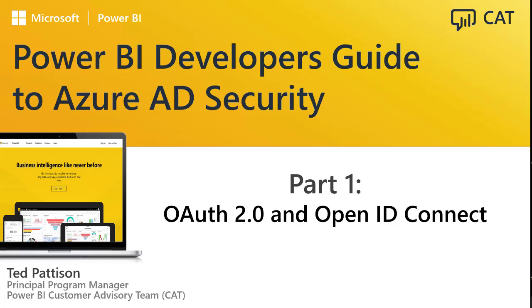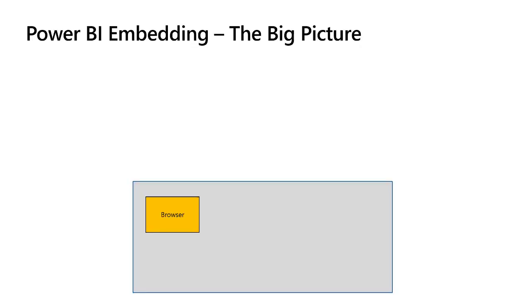This is for people who want to dig in and really understand what's going on. This is part one: OAuth 2.0 and OpenID Connect. A little bit of background. Before we get into the agenda of the session, let's talk about Power BI embedding at a high level and look at the big picture.